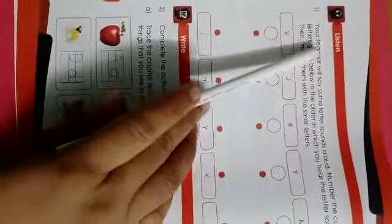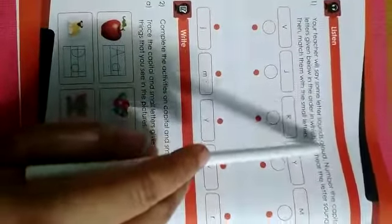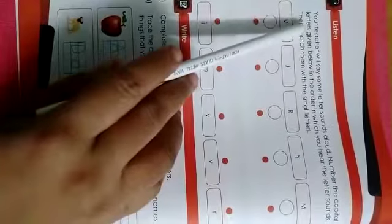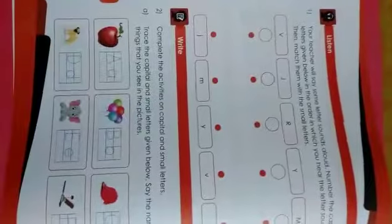Now, let's see the workbook, page number 18. Listen, your teacher will say some letter sounds aloud. Number the capital letter given below in the order in which you hear the letter sound. Then, match them with the small letters. Now, let's read out these letters.